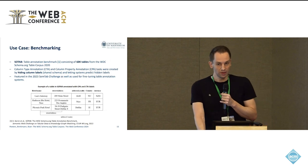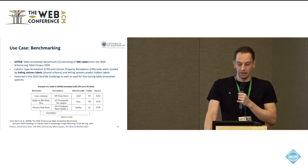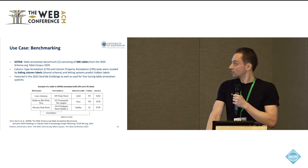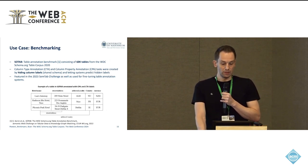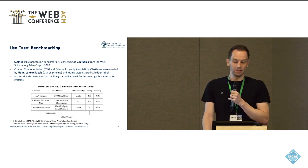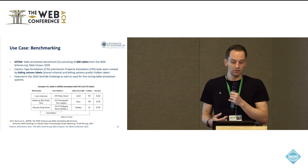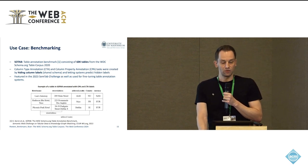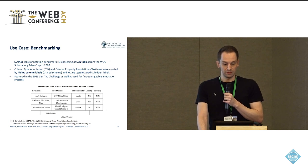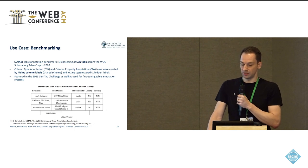Let's look at some use cases. One example is benchmarking: there's the SoTAP table annotation benchmark which consists of 60,000 tables from the 2020 version of our corpus. Column type annotation and column property annotation tasks were created by simply hiding away the column labels of the tables and then letting systems predict these labels. This works very well because we have a shared schema among the tables, making it straightforward to build these benchmarking datasets. This benchmark has been featured in the 2023 SemTab challenge and has also been used for fine-tuning table annotation systems.